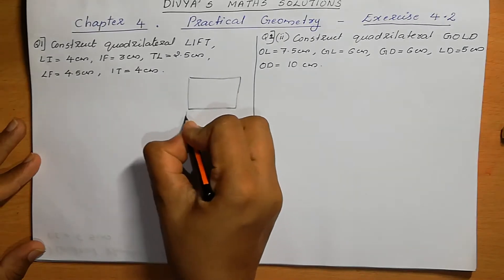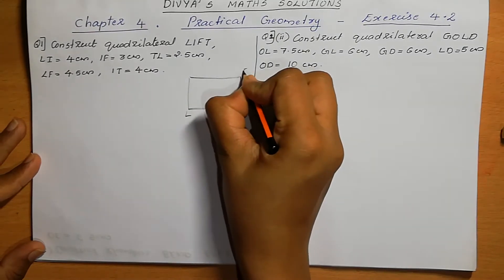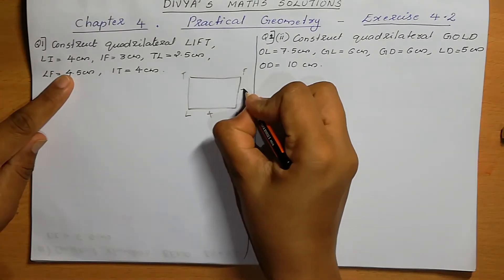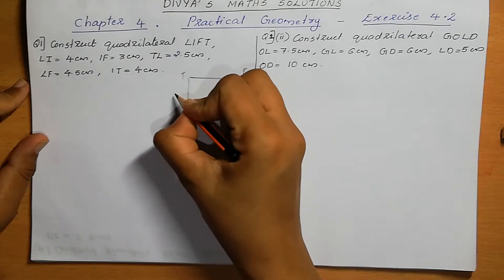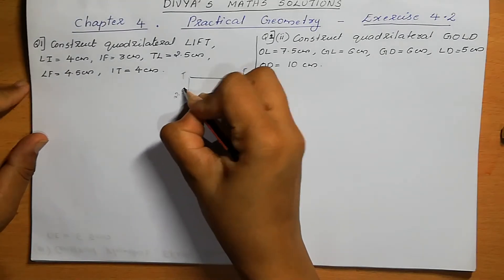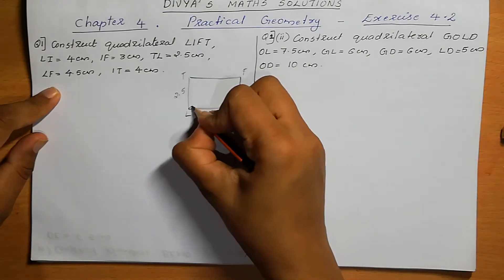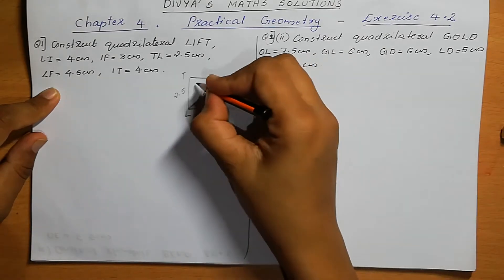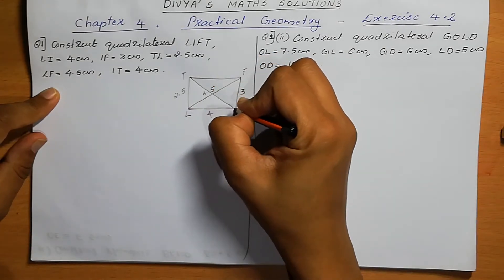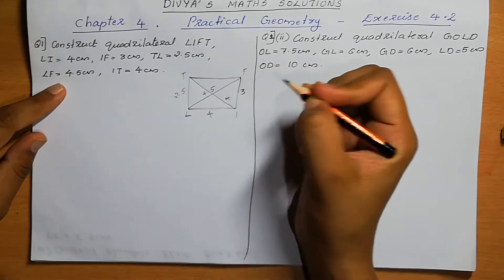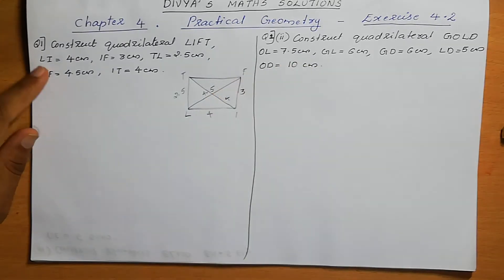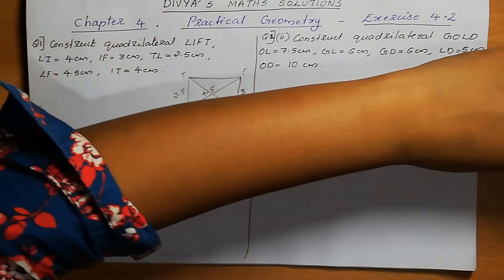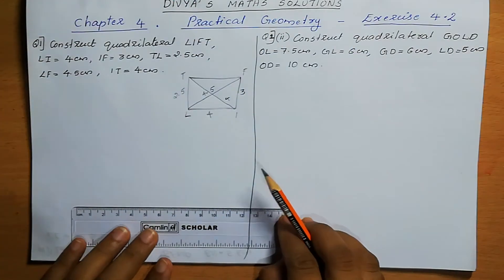Draw a four-sided figure, then we can mark LIFT where LI = 4, IF = 3 cm, TL = 2.5, LF = 4.5 — LF means this diagonal — and IT = 4, meaning this diagonal. So we need to construct this quadrilateral. Here we can take the base as LI = 4 cm. First we can draw the base LI equal to 4 cm.